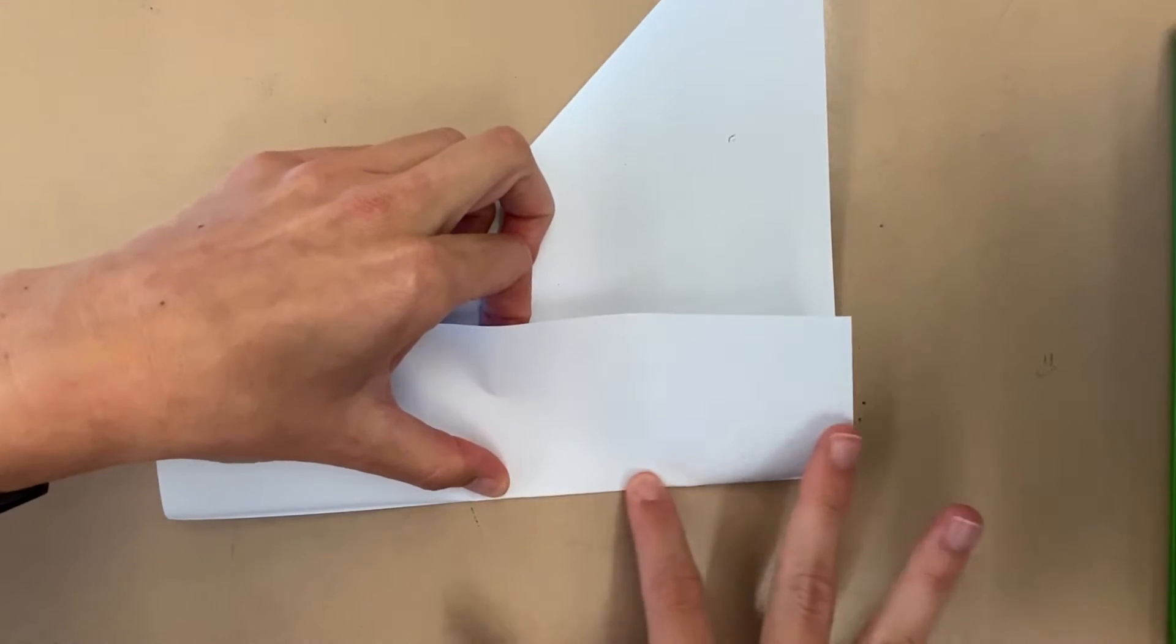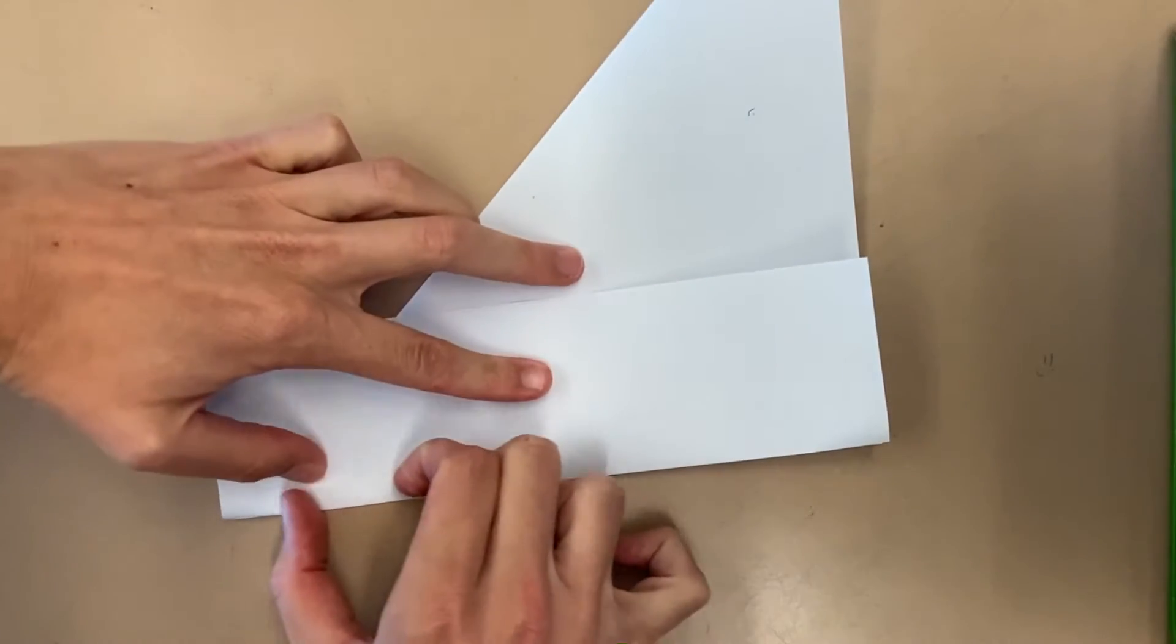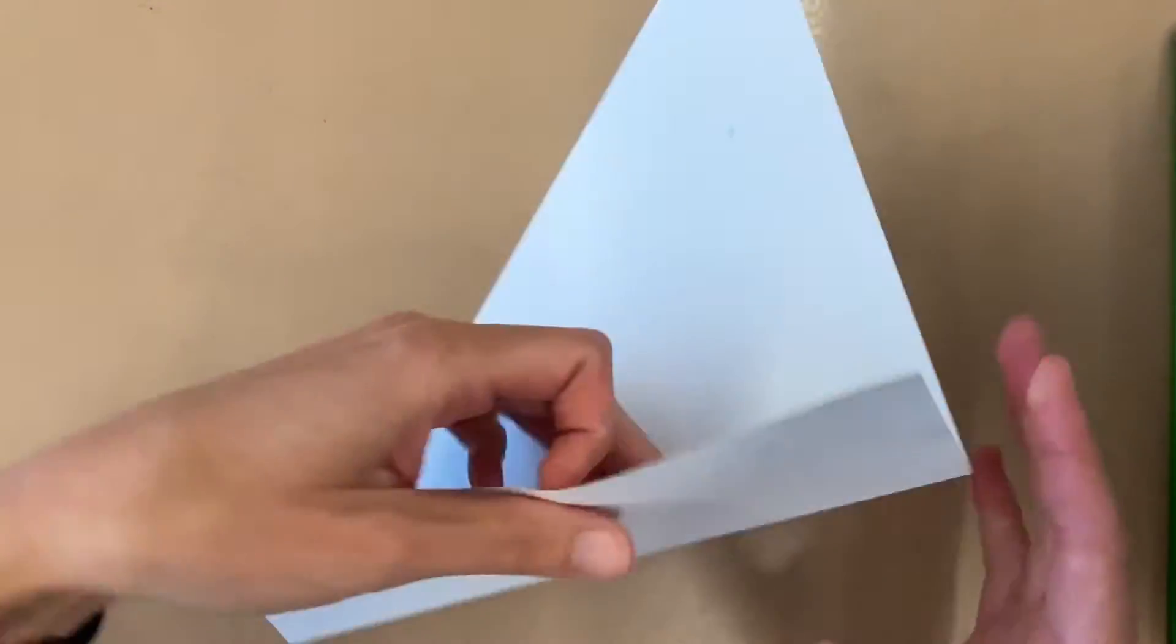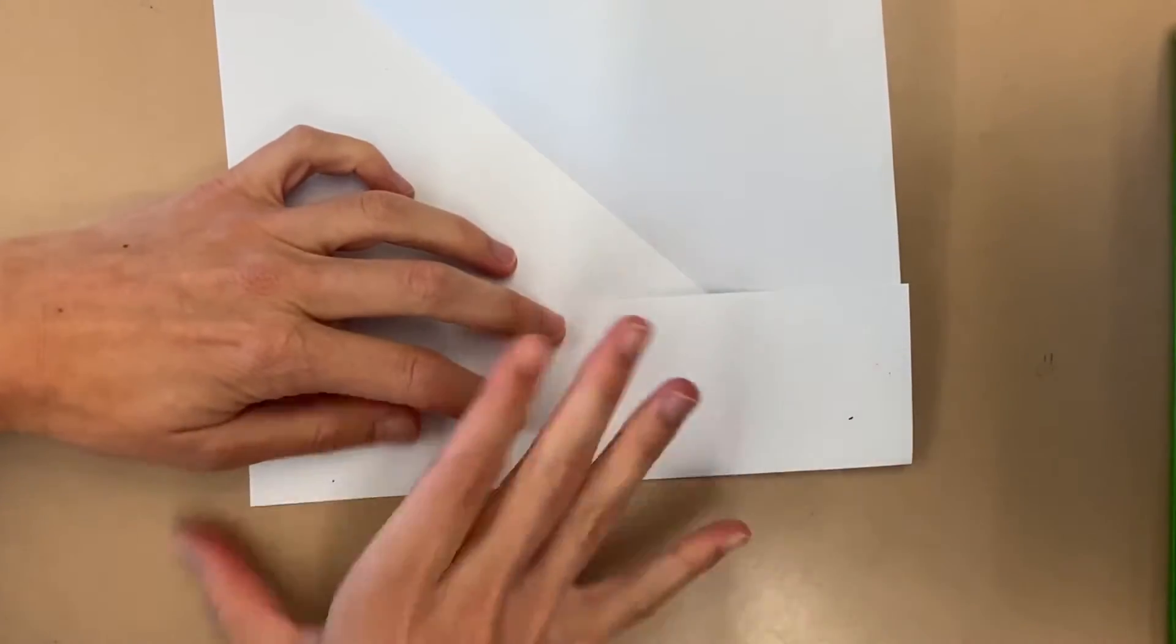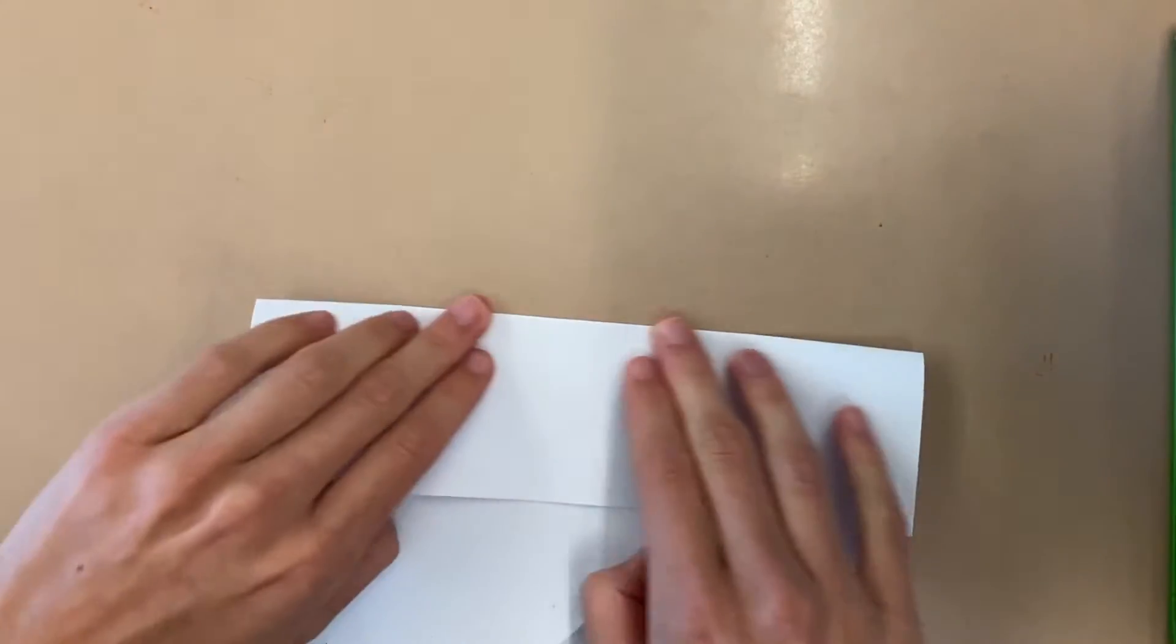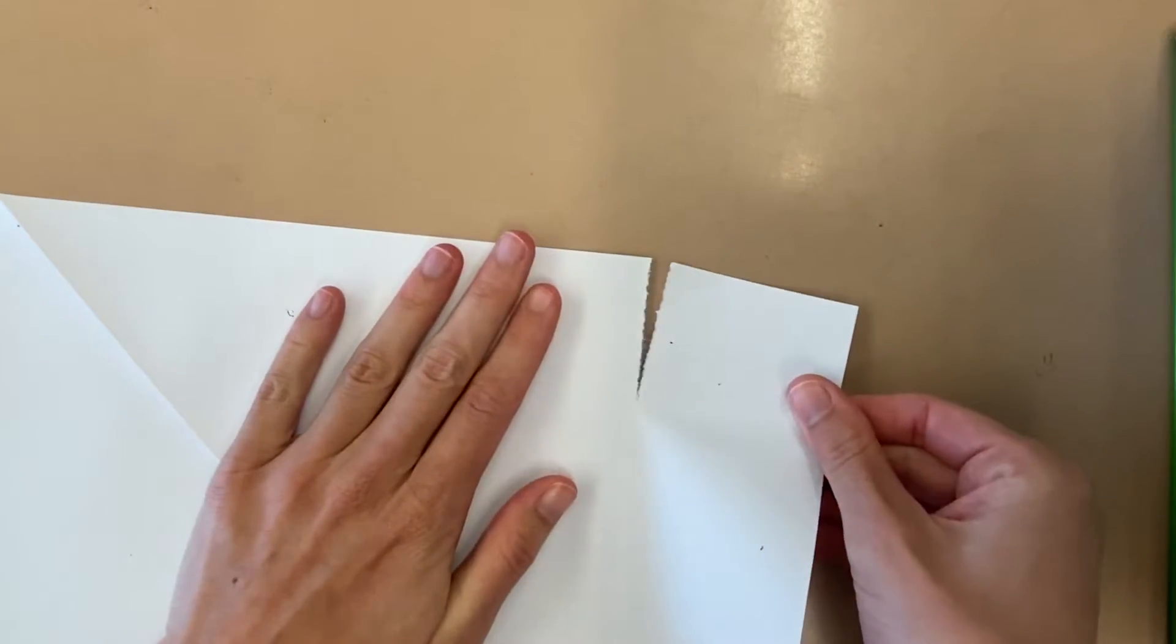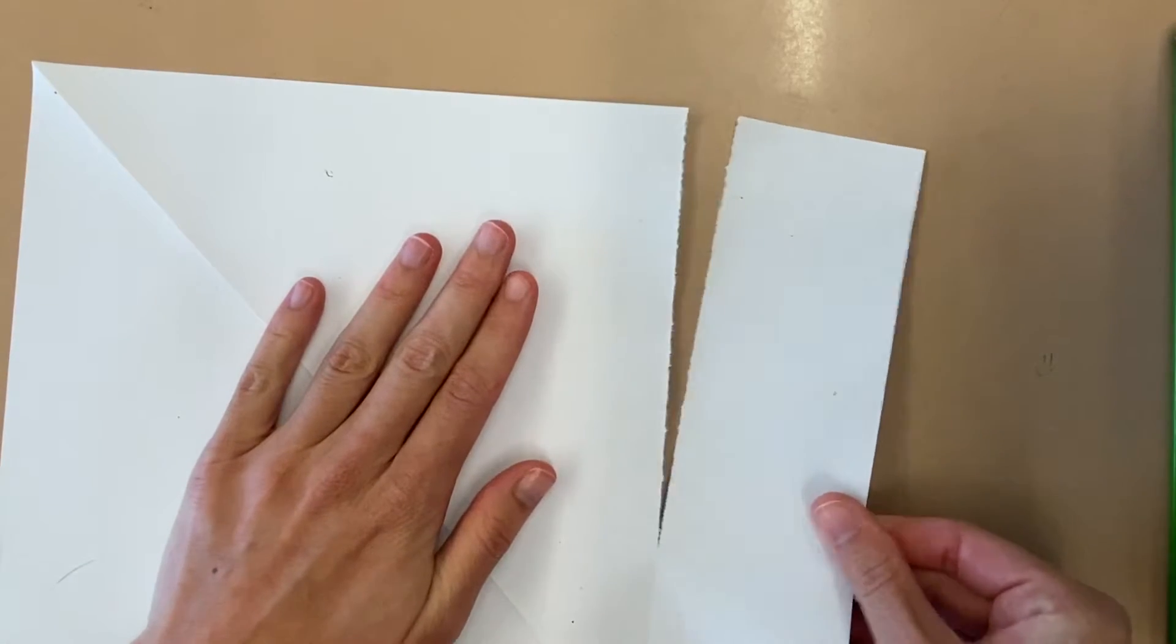And then a nice strong crease. I like to use my nail to kind of push down that crease. If you get it wrong, you can just unfold and redo it. And then I'm going to just fold this back and forth a few times to make it easy to tear. Again, I like to just run my fingernail along it to make the crease. And then carefully tear that piece off nice and slow. If you happen to have scissors with you, you can use those too.